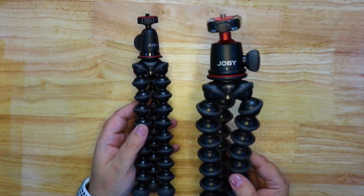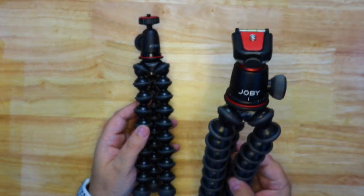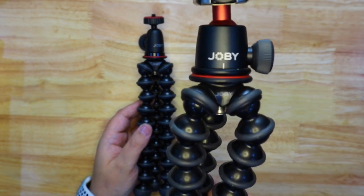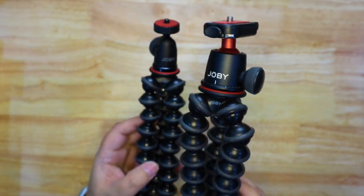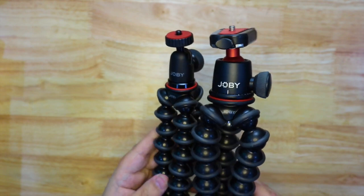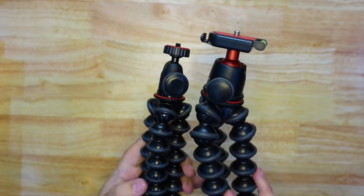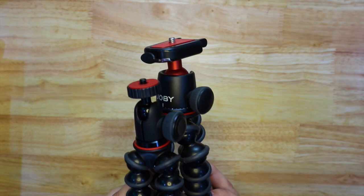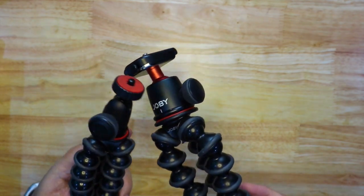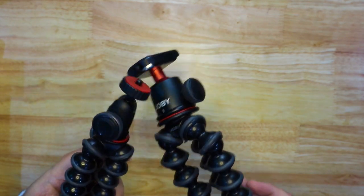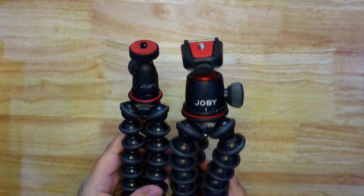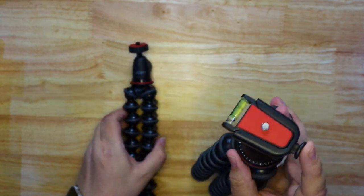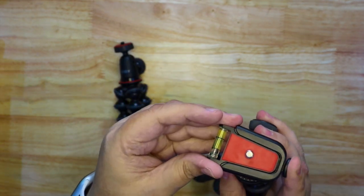This is the bigger 3K version. This one you can use heavier cameras on. But again, it's only up to three kilograms. So you have to be wary of what load you put on it. I have used it with my 6D Mark II and the 5D Mark II as well with the smaller L lenses. So don't put a giant telephoto or it's going to fall over.